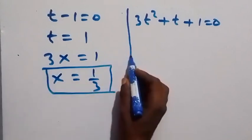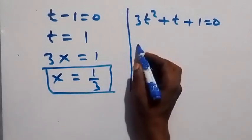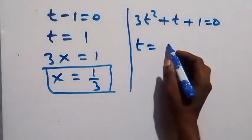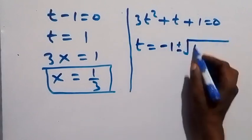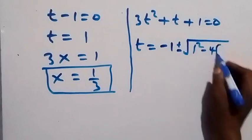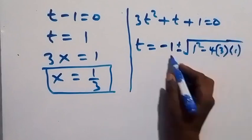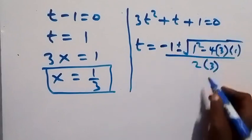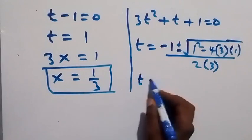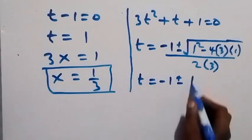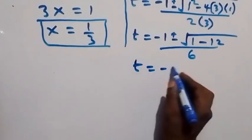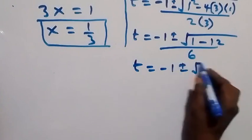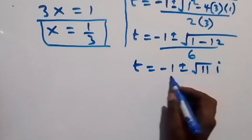For the second case, we use the quadratic formula. t equals minus b, where b is 1, so minus 1, plus or minus square root of b squared minus 4ac — that is 1 minus 4 times 3 times 1 — over 2a, which is 2 times 3. This gives t equals minus 1 plus or minus square root of minus 11, over 6.